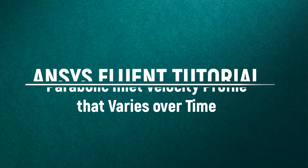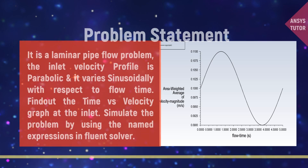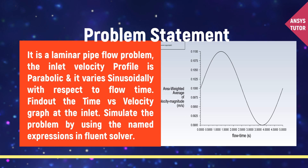Hello viewers, welcome to our channel. In this tutorial I would demonstrate how to put a parabolic velocity profile at the inlet for a transient laminar pipe flow problem. The inlet velocity profile is parabolic and it varies with respect to time. You need to find out the time versus inlet velocity graph and simulate the problem using the named expressions option in ANSYS Fluent.